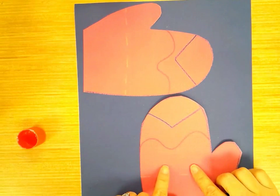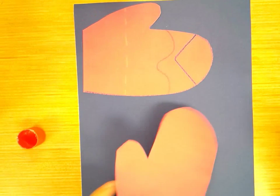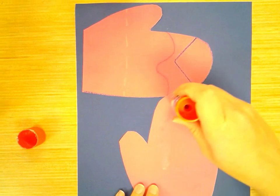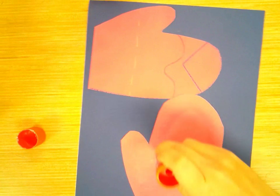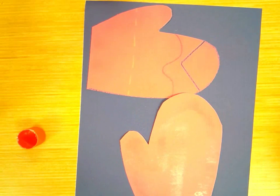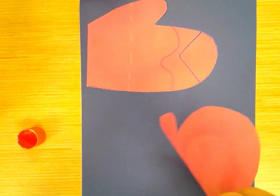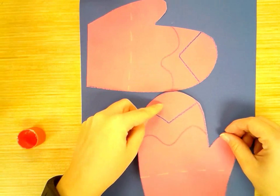And then I'm going to do the same thing with this mitten. I'm going to turn it over. I'm going to put the glue all the way around and up that thumb, and then one line down the middle. And then I'm going to turn it over and put it back in that same spot that it was in.